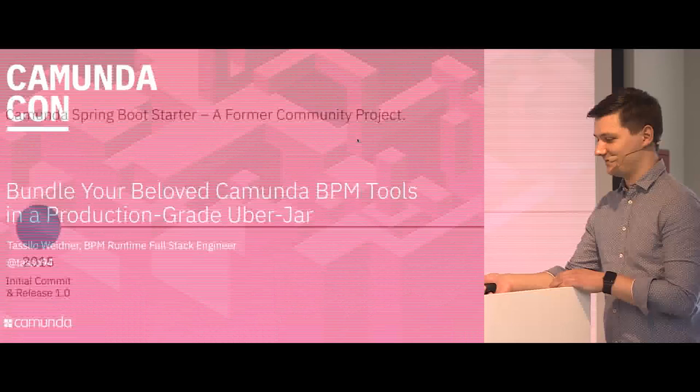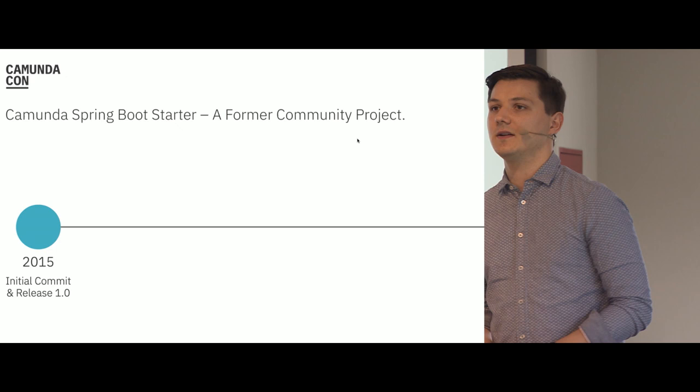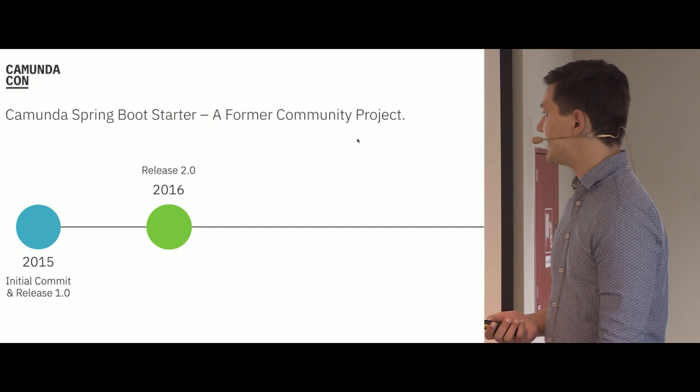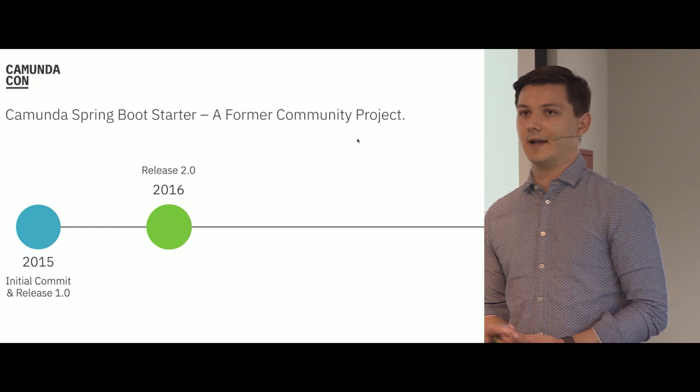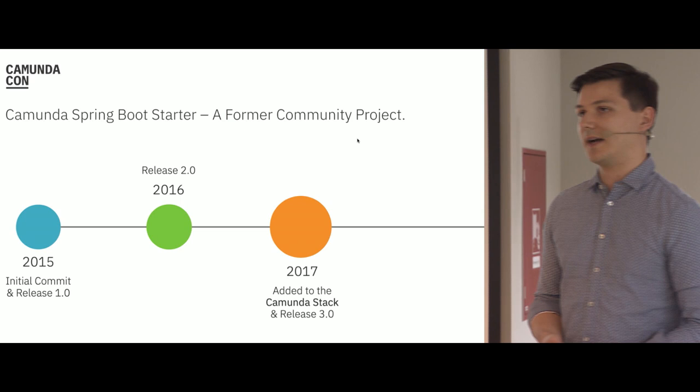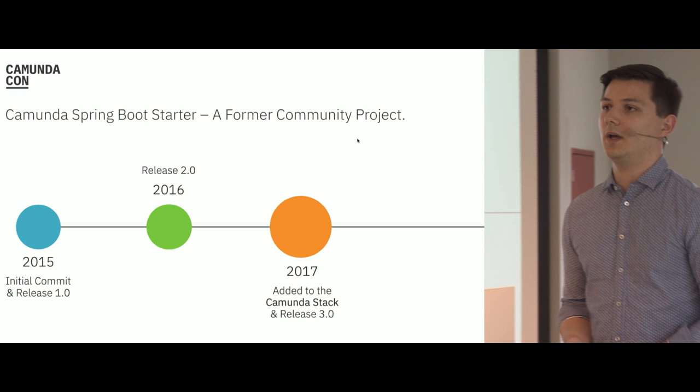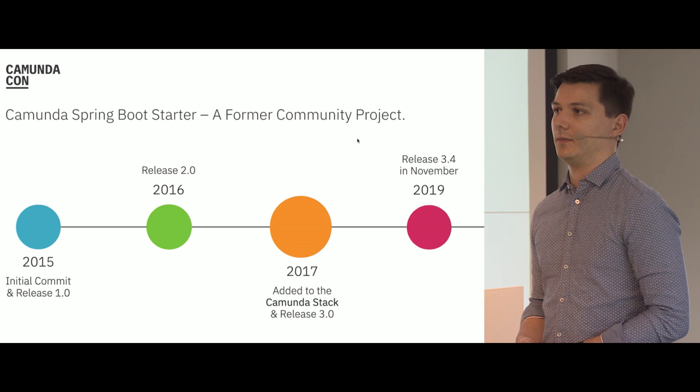Camunda Spring Boot Starter was initiated in 2015 by members of the community, and in 2016 version 2.0 was released, which aroused great popularity among Camunda users. This is why we added it to the official Camunda product stack in 2017 and released version 3.0. Later this year we will release version 3.4 together with Camunda BPM 7.12.